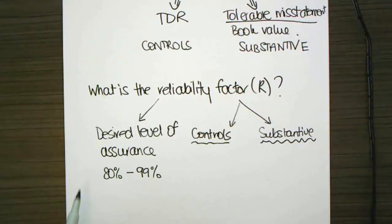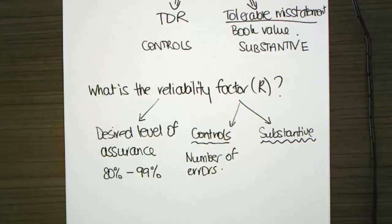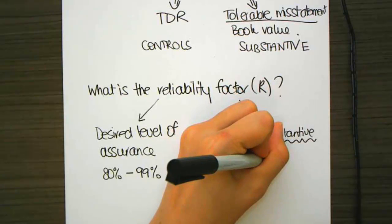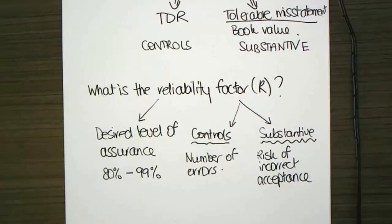When I'm doing substantive testing, to gather the information on my reliability factor, I'm going to do something slightly different. So, to calculate our reliability factor when we're doing substantive testing, we need information on the risk of incorrect acceptance. The risk of incorrect acceptance is the risk that I will accept that the account is free from material misstatement when it really is not. So, if my desired assurance is 95%, then my risk of incorrect acceptance is going to be 5%.